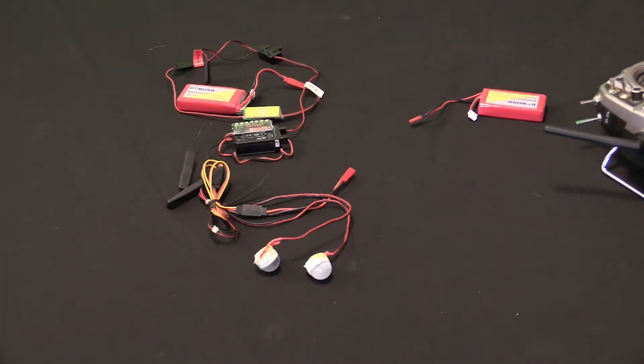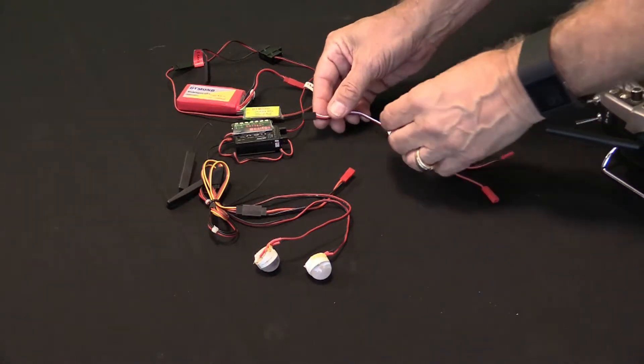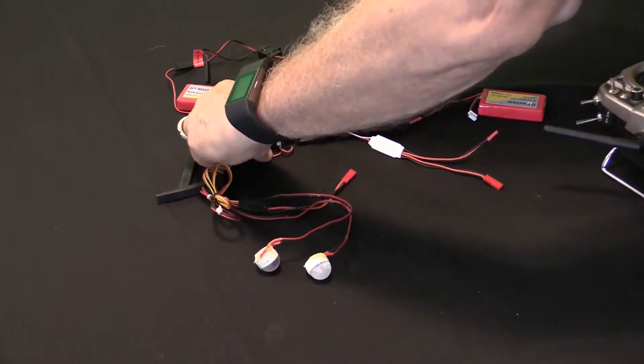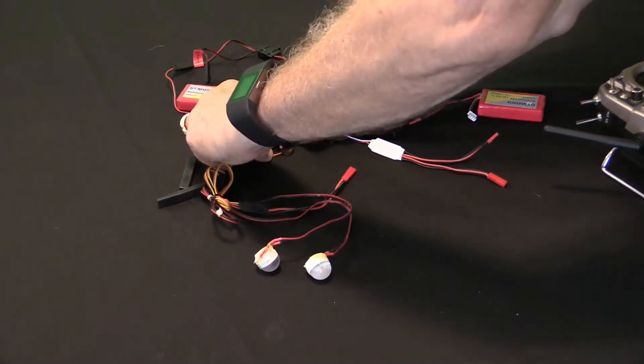Okay, here we go. So what we're basically going to do, I'm going to hook this up to my channel 6, which I have set up for a two-position switch for my flaps. Hook a little wire in there.